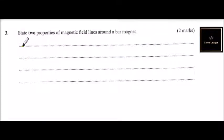This is question number three and we are told state two properties of magnetic field lines around a bar magnet, and you get two marks.